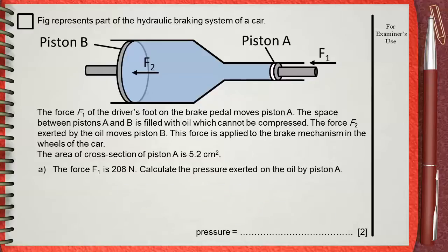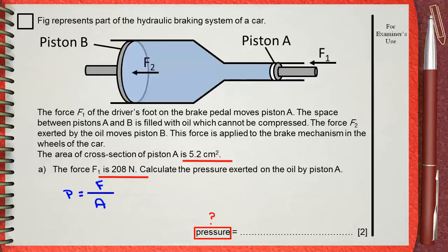We are going to underline the givens in the question. We have the area 5.2 cm² and the force 208 N. He is asking for the pressure. The rule that gives the relationship between pressure, force, and area is: pressure equals force over area.